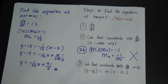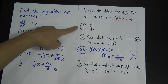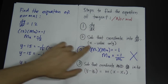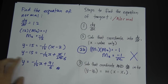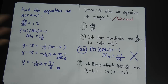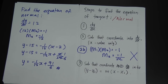Step three: substitute your coordinate and gradient — which is dy/dx — into y minus y1 equals m times x minus x1. For equation of normal, add step 2b: m1 times m2 equals negative 1, because they are perpendicular, to get m2, then substitute m2 into m. Make sure you use the correct coordinates, as you can only substitute the coordinate that the tangent or normal line passes through. I hope this video helps you find the equation of tangent and normal.